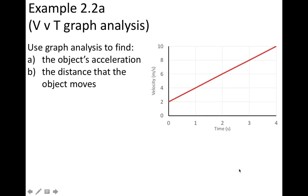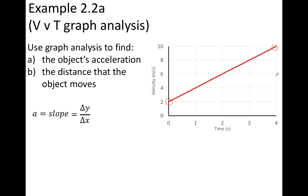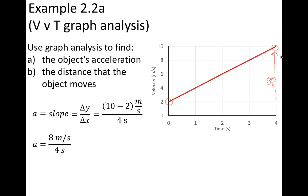In this example, we'll use the velocity versus time graph to find the object's acceleration and the distance that it moves. To find the acceleration, we use the fact that acceleration equals the slope of the graph, so we choose two points. Using points (0, 2) and (4, 10), the change in y is 8 meters per second and the change in x is 4 seconds, giving a slope of 8 m/s over 4 s, or 2 meters per second squared.